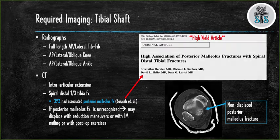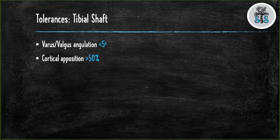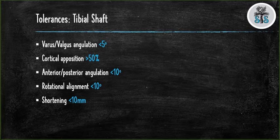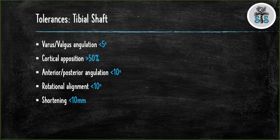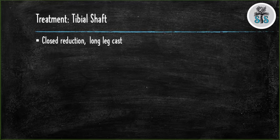You must know the surgical tolerances for tibial shaft fractures. Remember the numbers 5 and 10: 5 degrees of varus or valgus, greater than 50% cortical apposition, less than 10 degrees anterior-posterior angulation, up to 10 degrees of rotation, and less than 10 millimeters of shortening. If all of these tolerances are achieved, you can treat the tibial shaft fracture non-operatively by placing the patient's leg in a long leg cast with the knee in 0 to 5 degrees of flexion.